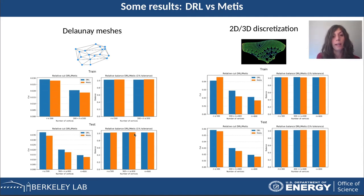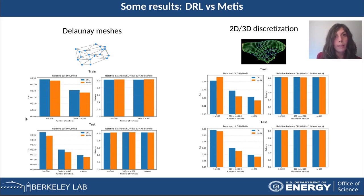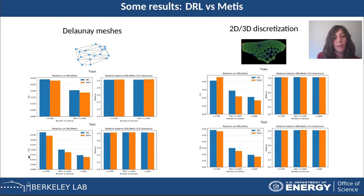We see that both for training and testing, the balance is the same as METIS. The cut is also very similar. It seems there is a small difference, but one has to look at the scale of the relative cut — they are very close to each other. The same is true for the testing dataset; the relative cuts are very close.